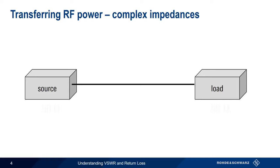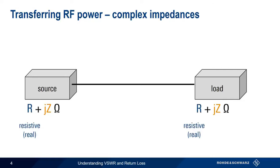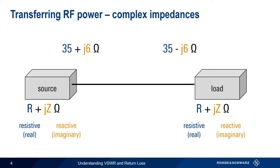So far, we've shown our impedances as purely resistive values. But in reality, every load impedance is a complex impedance, consisting of both a real, resistive part, and an imaginary, reactive part. A complex impedance is matched by its so-called complex conjugate, in which the sign of the imaginary part is reversed. At this point, it might be a good idea to pause for a brief refresher on impedance.